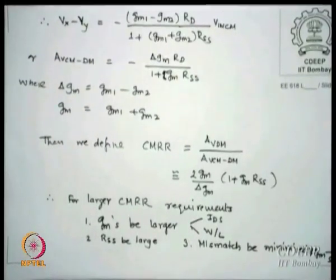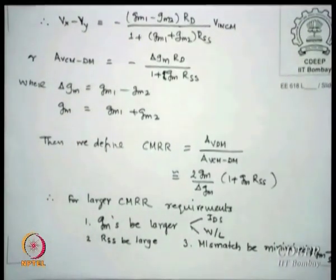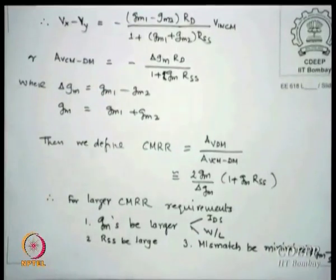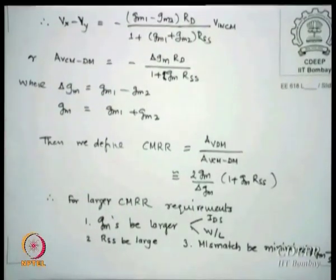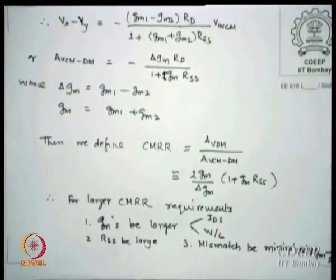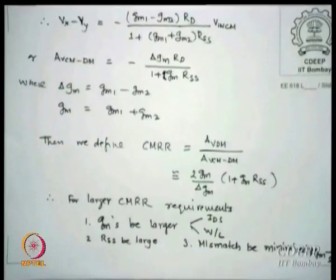Each fabrication run (turn-around) costs money. For a 90 nm process, approximately 8 lakh rupees per mm² at full price (discounted for academic use); for 0.35 micron it is about 2.5 lakh rupees per mm². Most lab designs are constrained by cost. More turn-arounds mean more cost, so getting the design right with fewer iterations is essential.